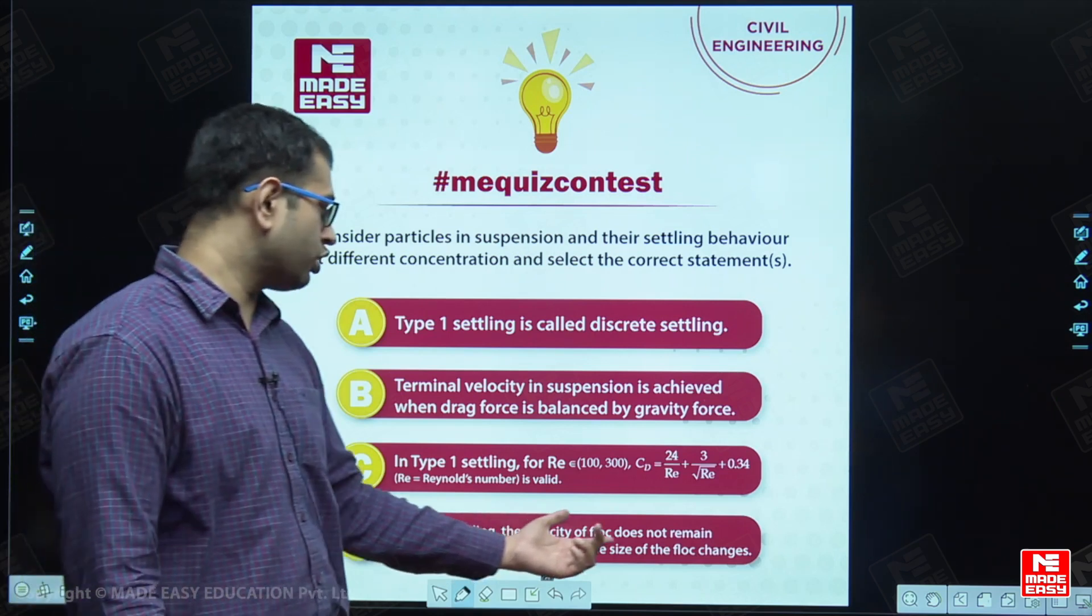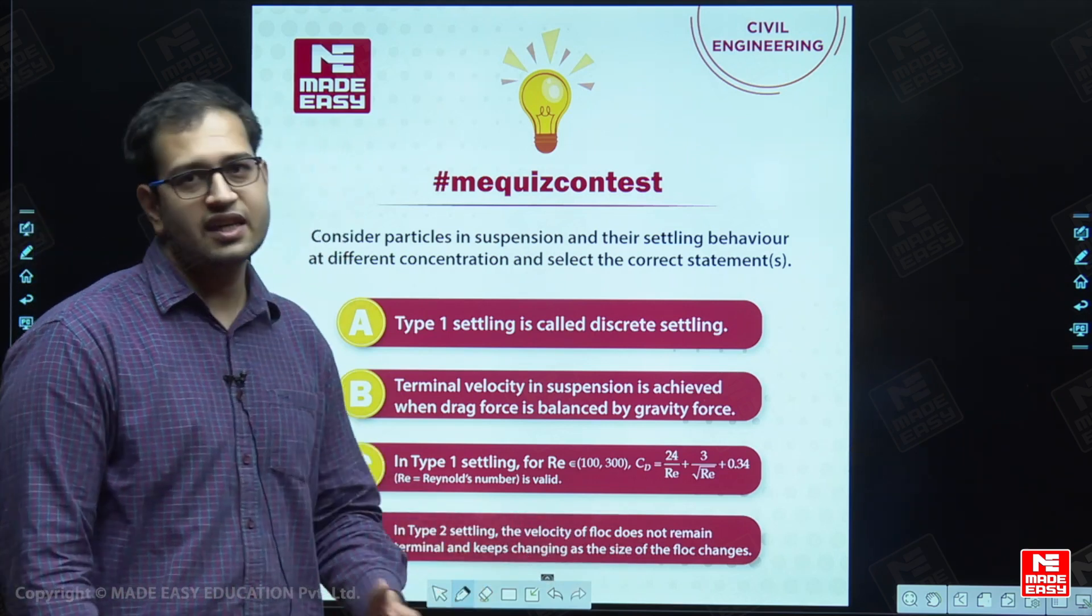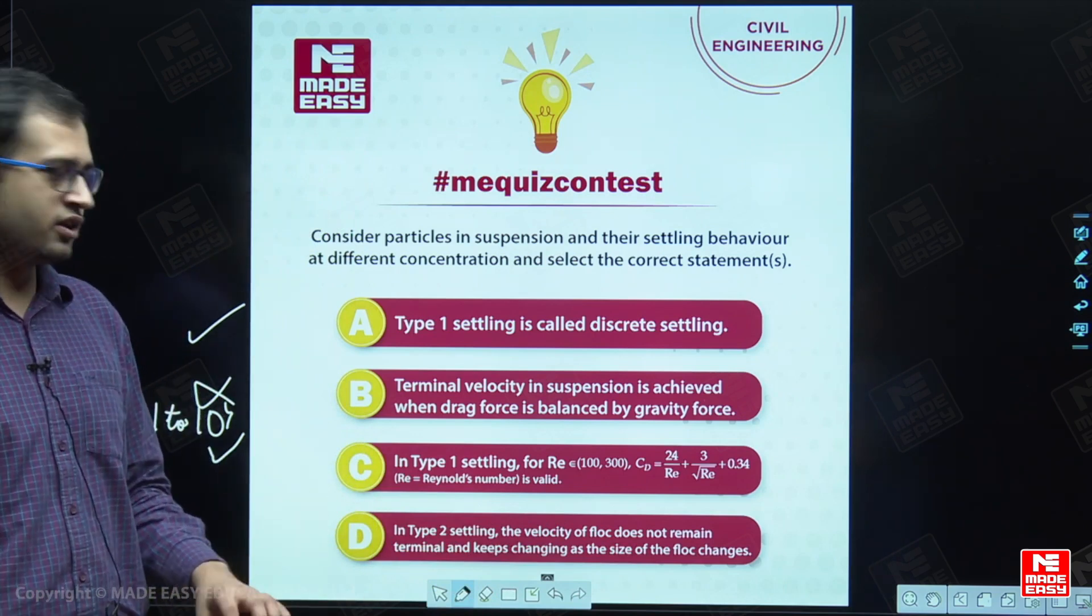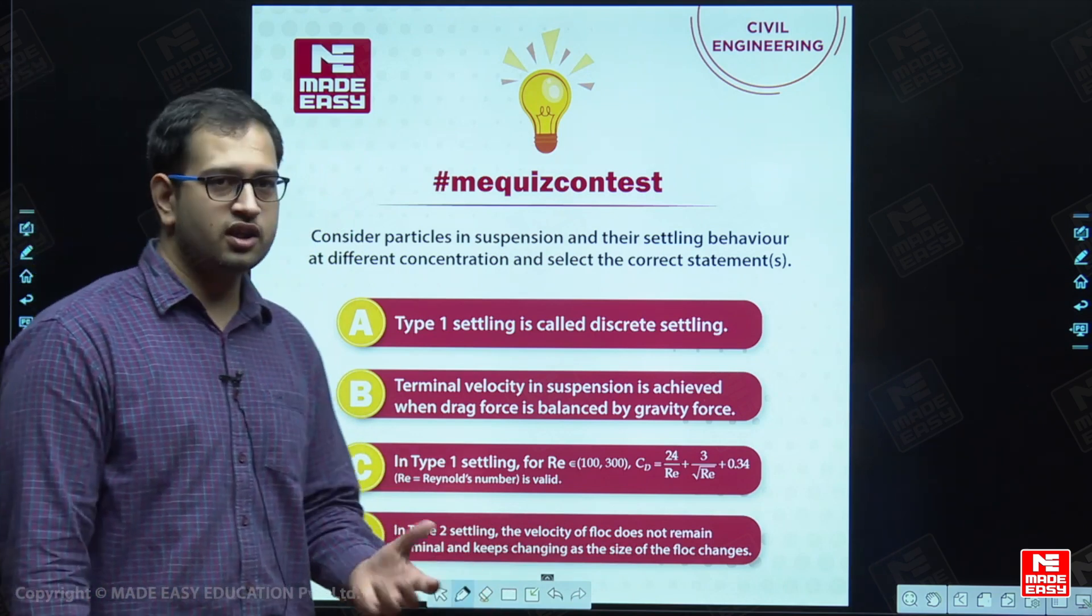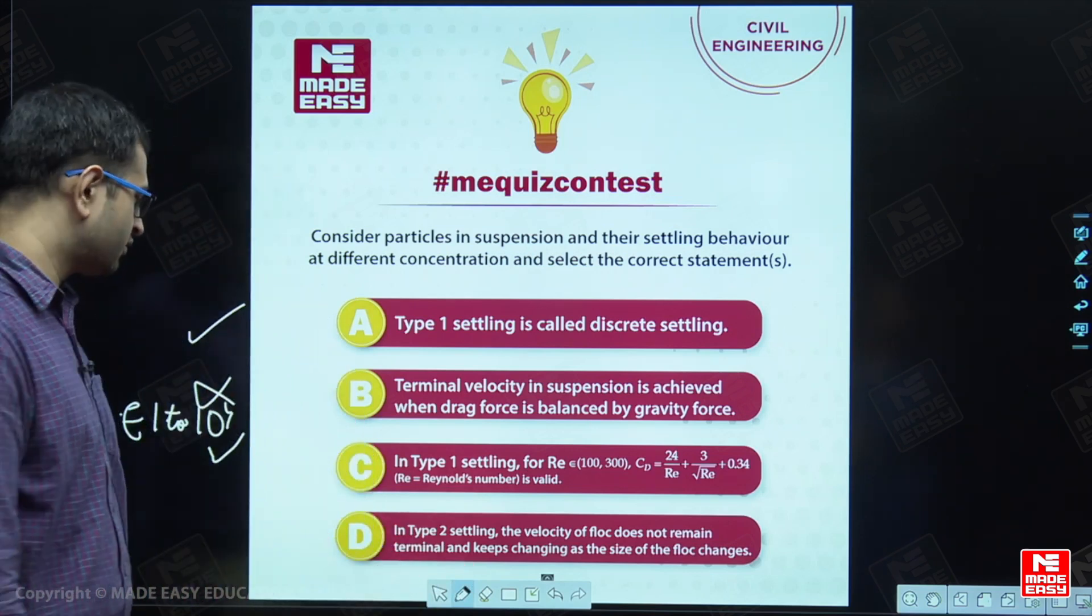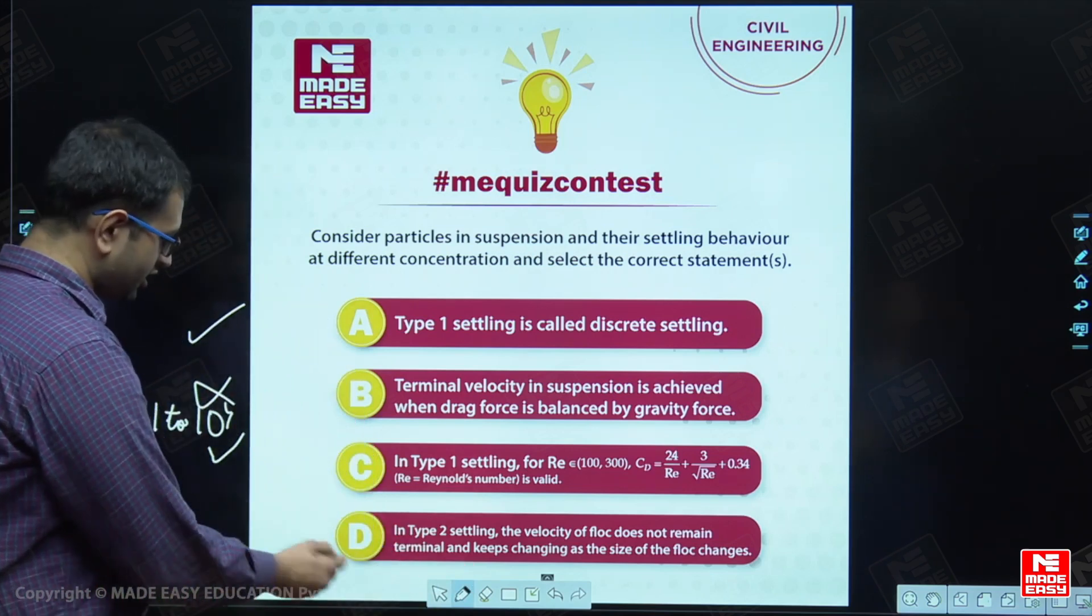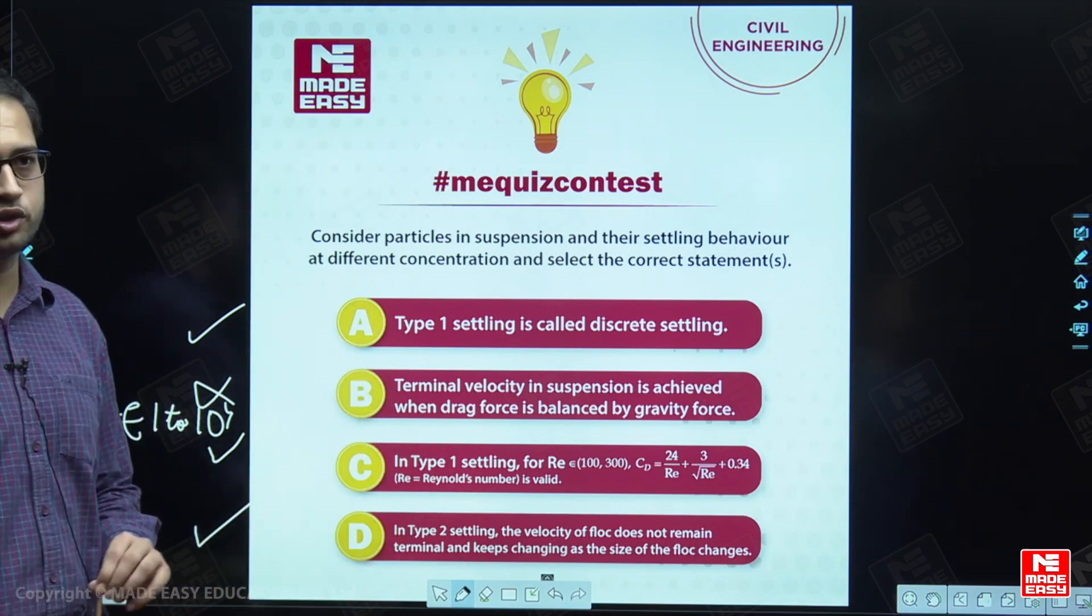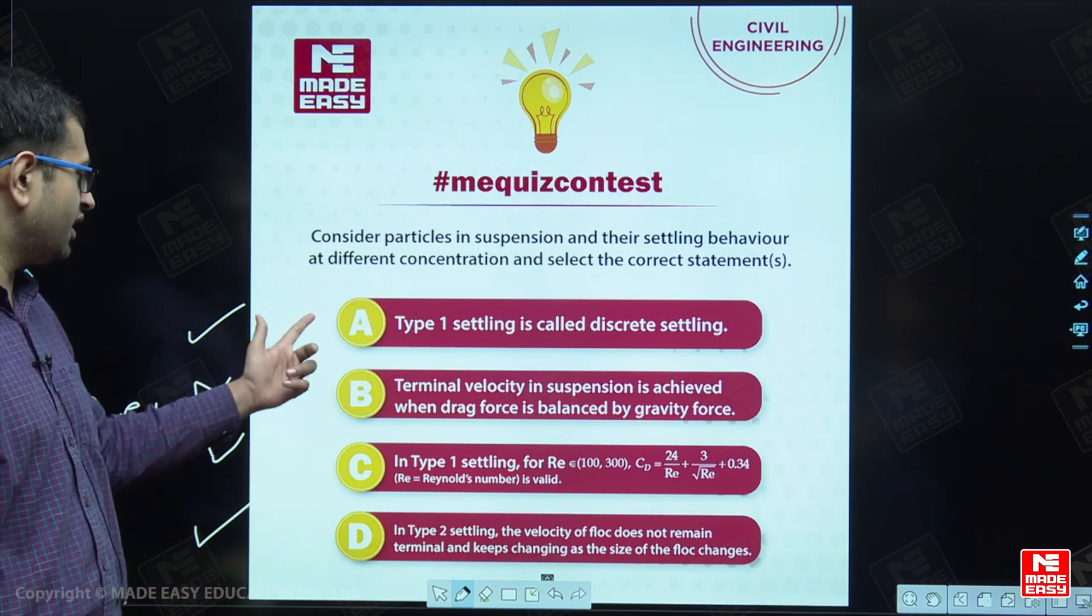And in type 2, velocity of flux does not remain terminal. Yes, since the velocity keeps on increasing, we do not term it as the terminal velocity, and its velocity keeps on increasing, is it found by column settling method. Hence, option C D is also correct. So, the answer would be A, C and D.